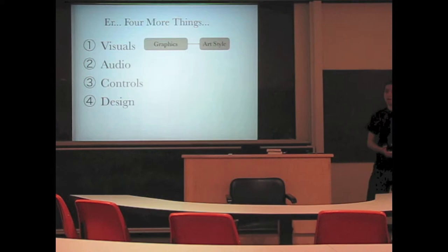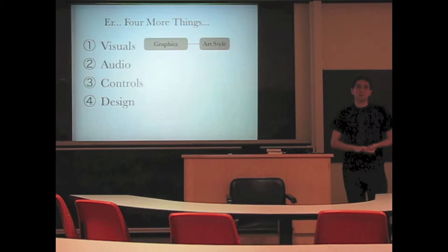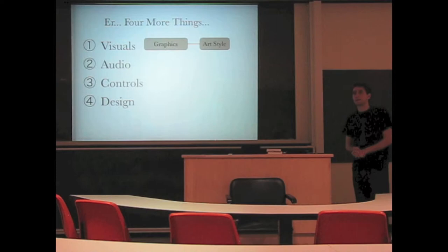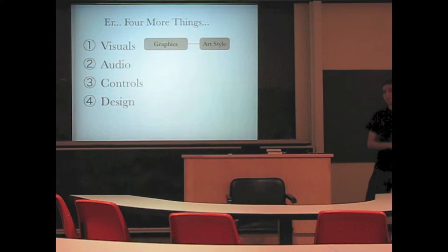So for visuals, mainly the very general terms that you look over are the graphics and the art style. Those things both compose how the game is presented to you and what it looks like. These things can be very revealing in terms of information. You can tell if a game is from 1985 or if it's from 2008 just by looking at the graphics and the art style.